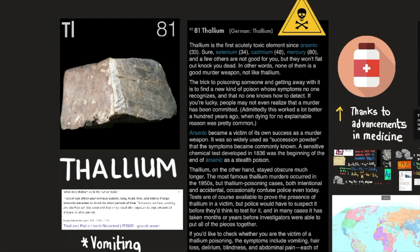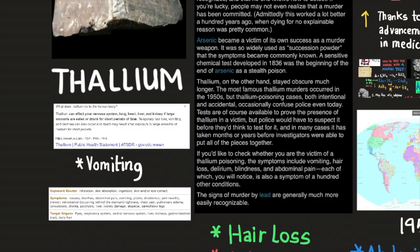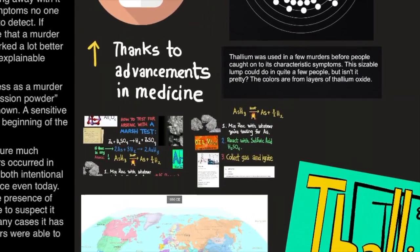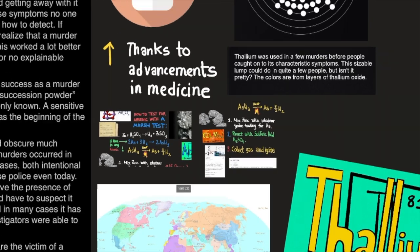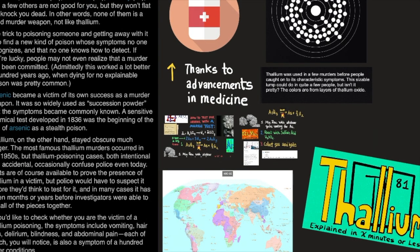Admittedly, this worked a lot better 100 years ago when dying for no explainable reason was pretty common. Arsenic became a victim of its own success as a murder weapon. It was so widely used as succession powder that symptoms became commonly known. A sensitive chemical test developed in 1836 was the beginning of the end of arsenic as a stealth poison.